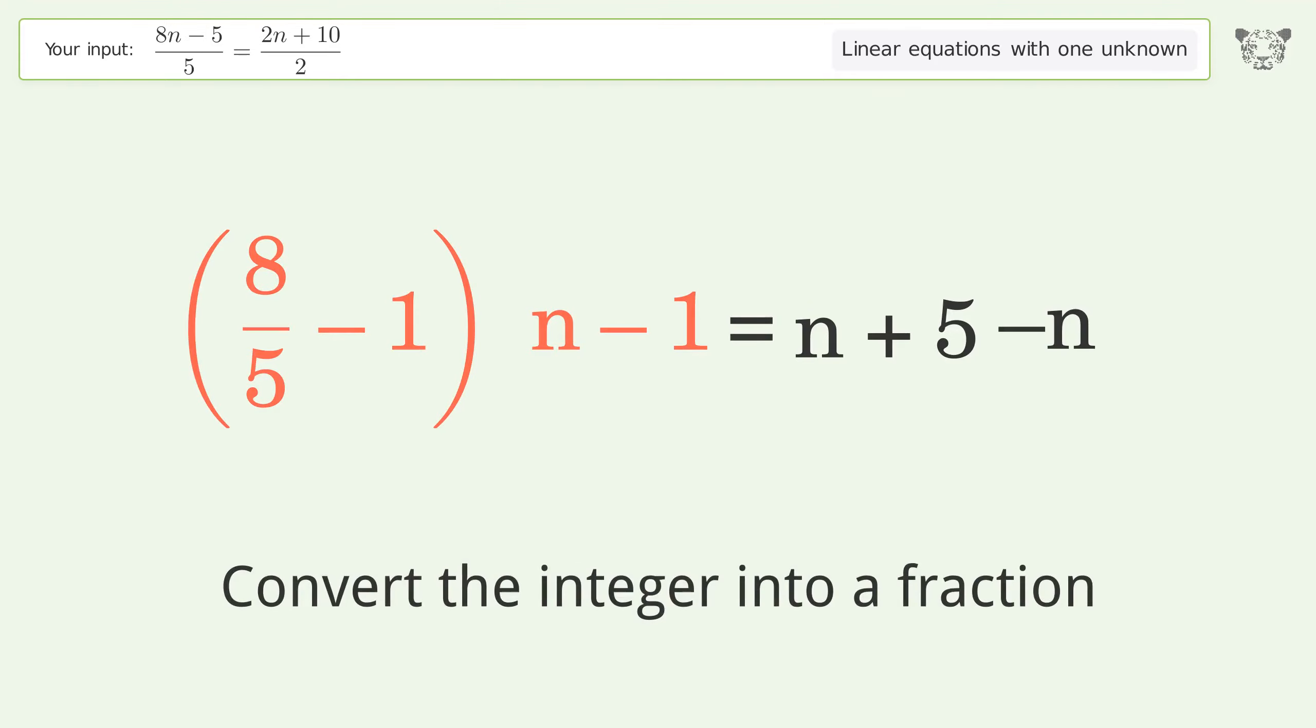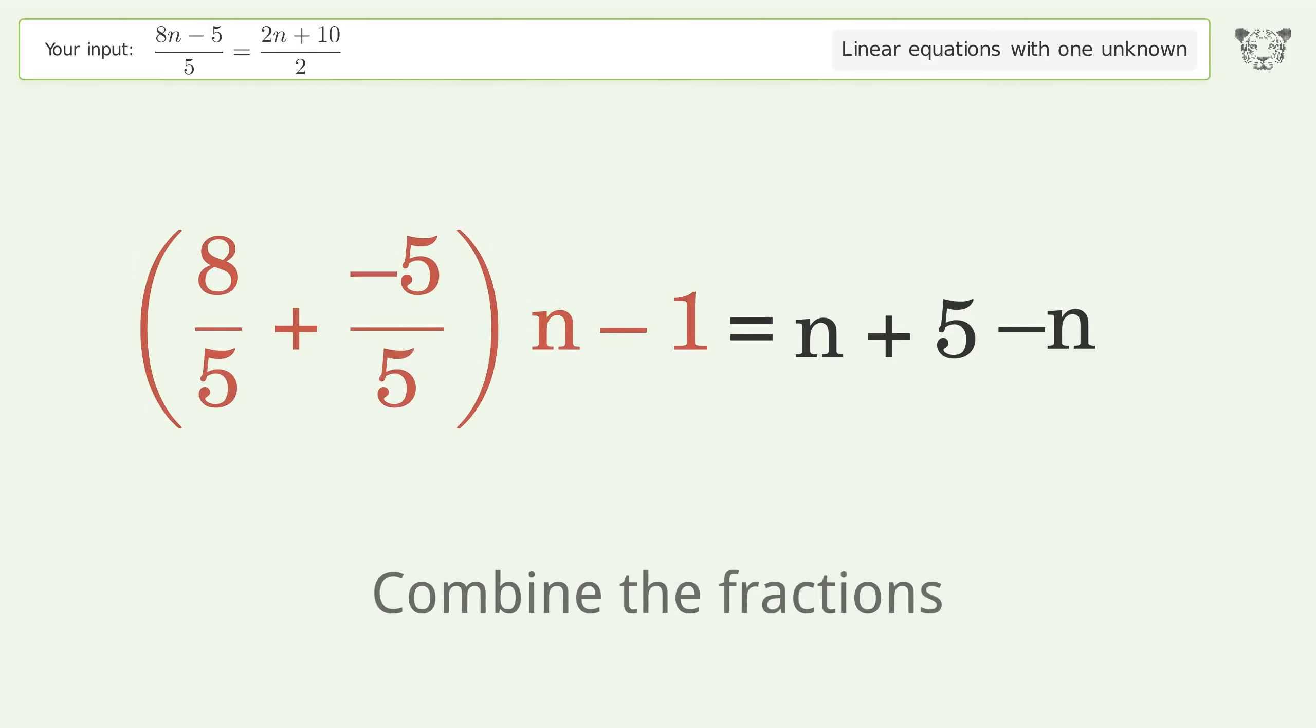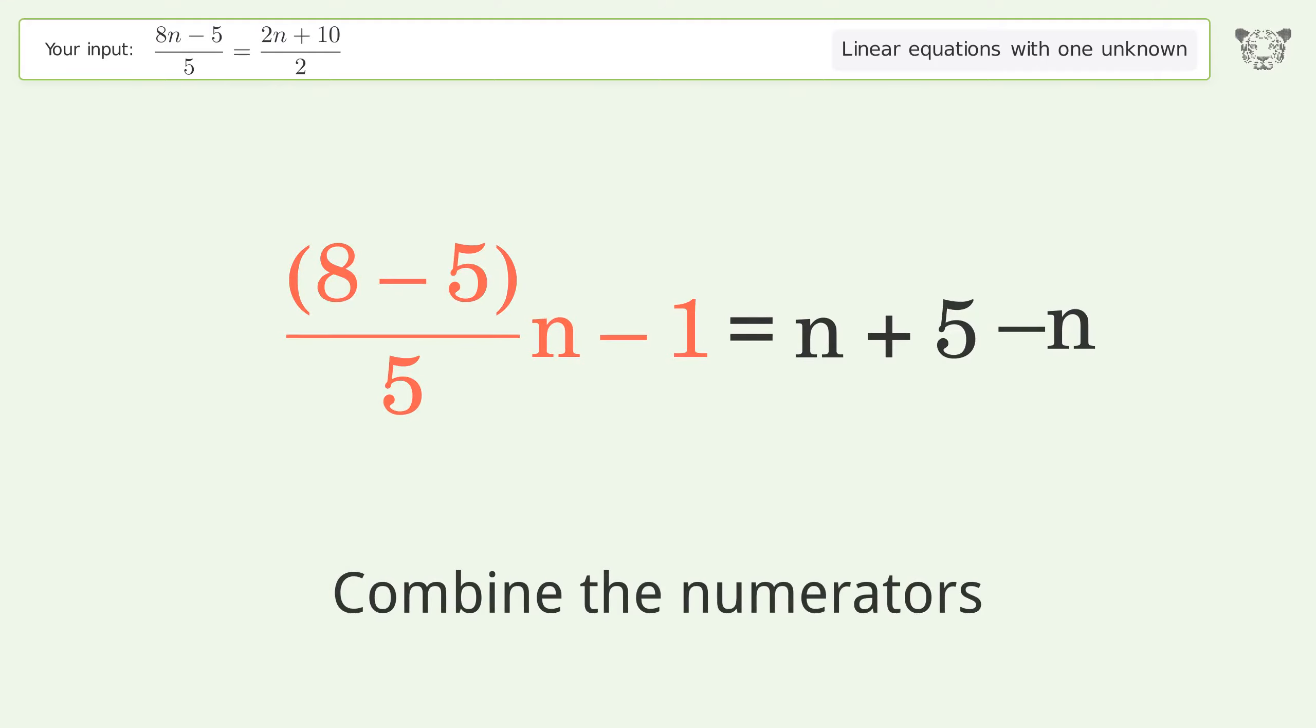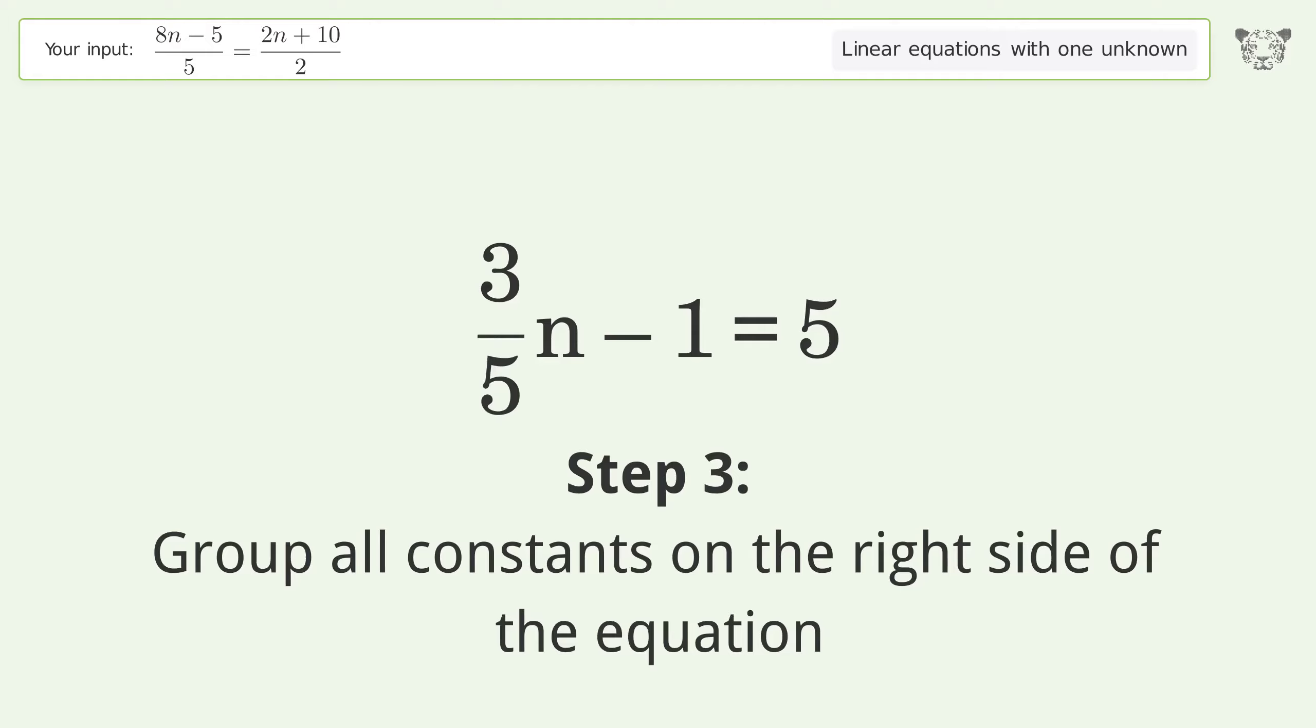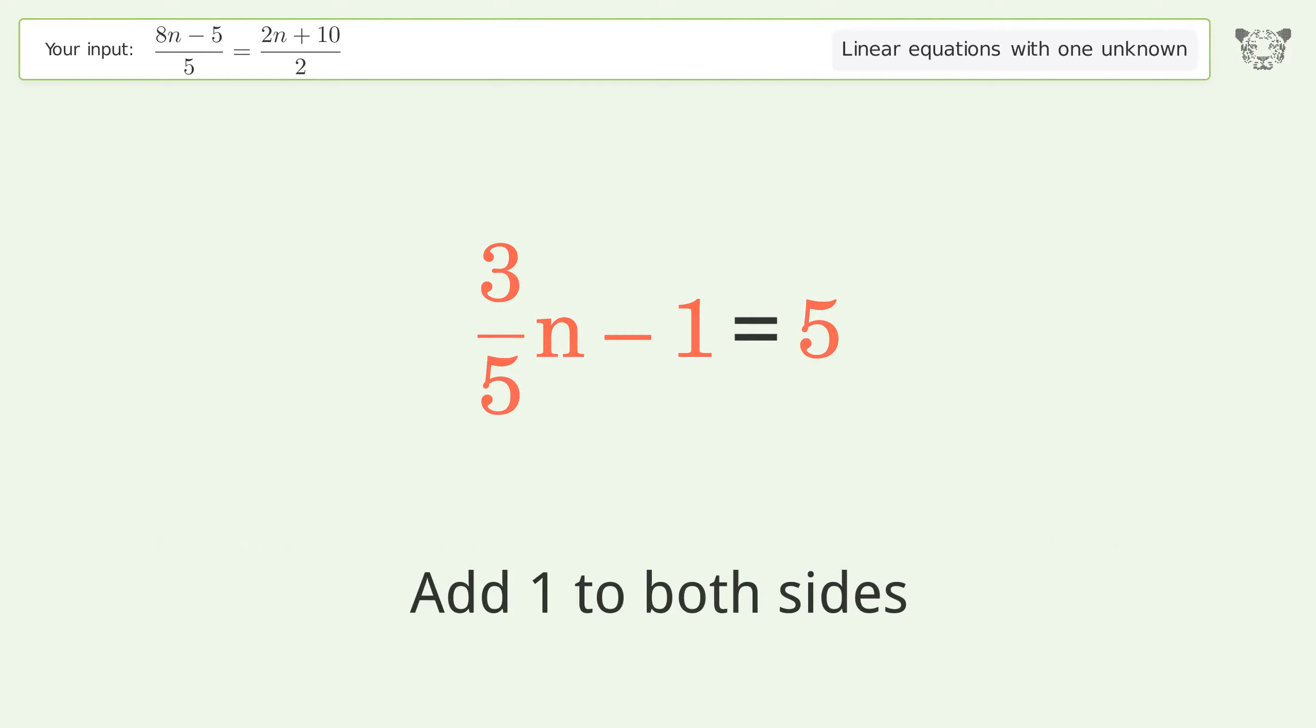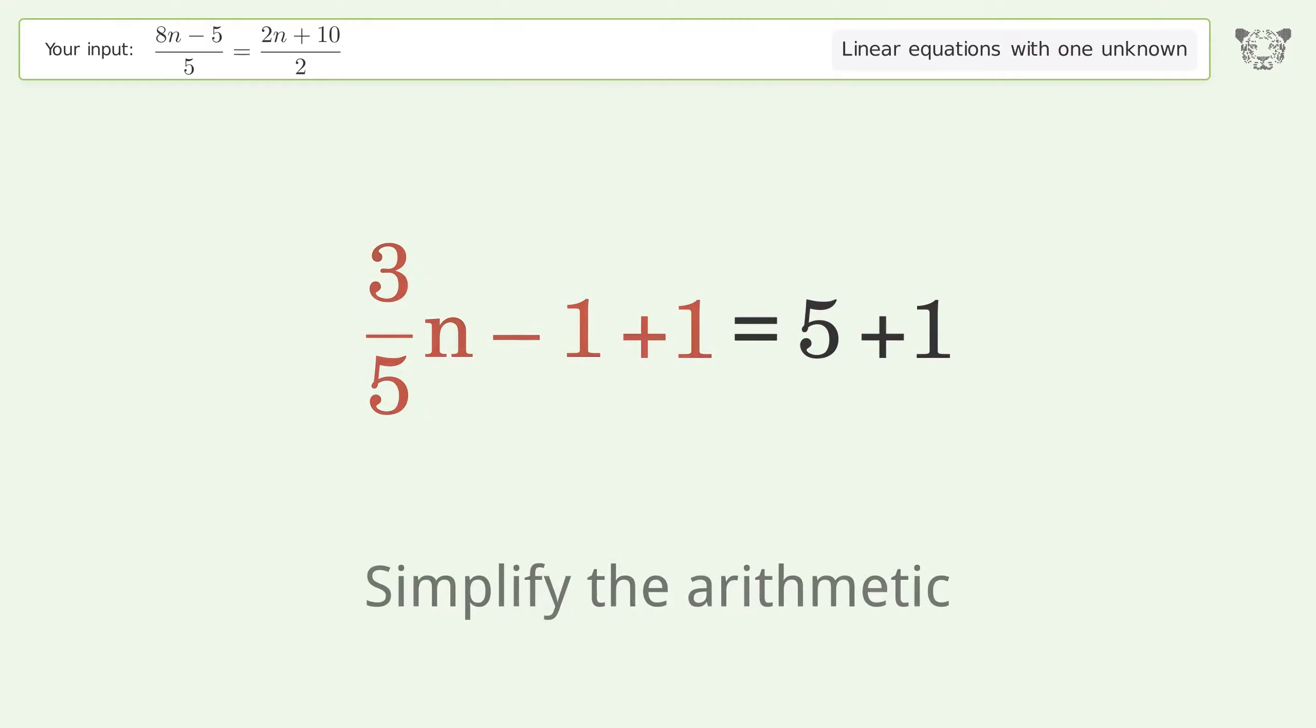Convert the integer into a fraction. Combine the fractions. Combine the numerators. Group like terms. Simplify the arithmetic. Group all constants on the right side of the equation. Add 1 to both sides.